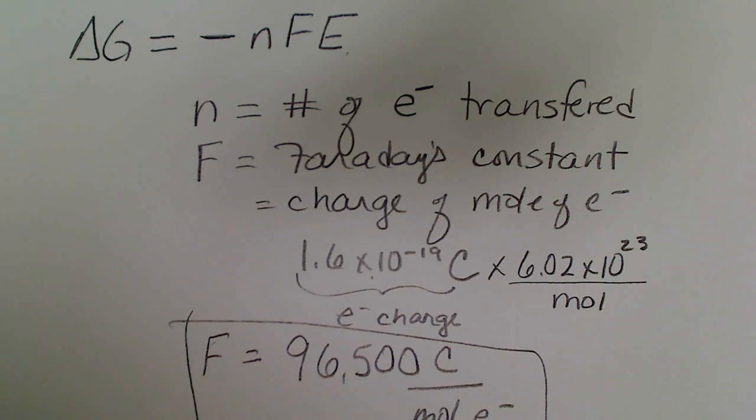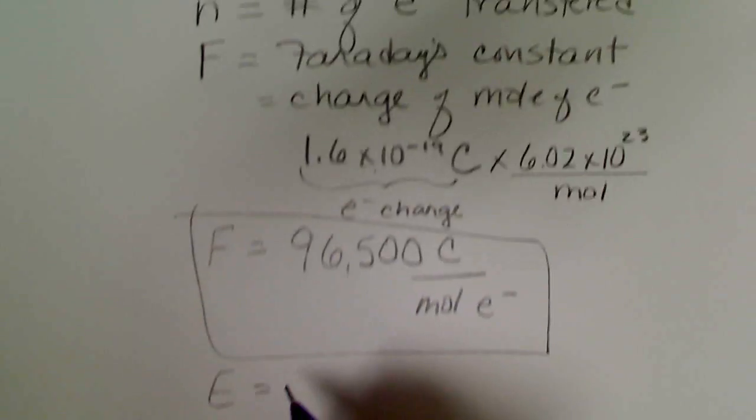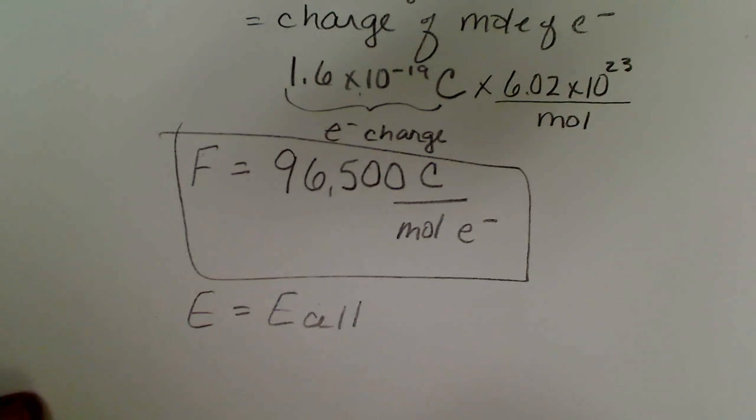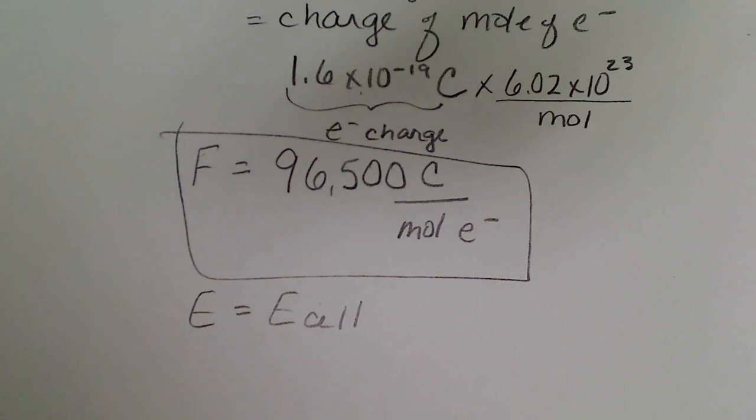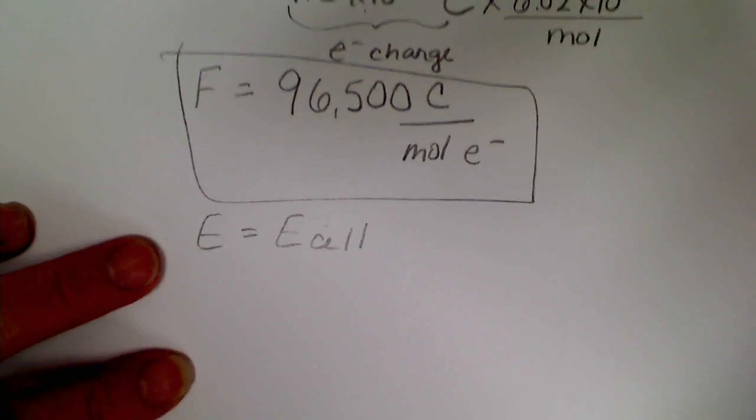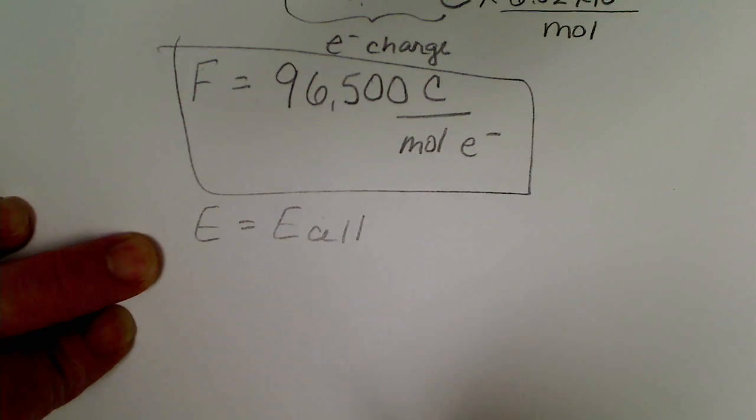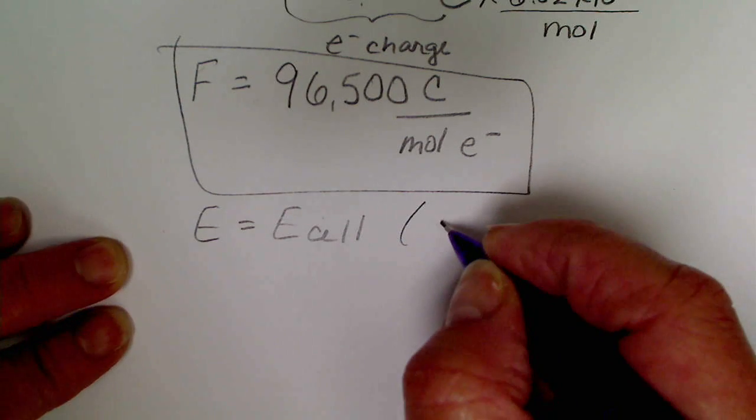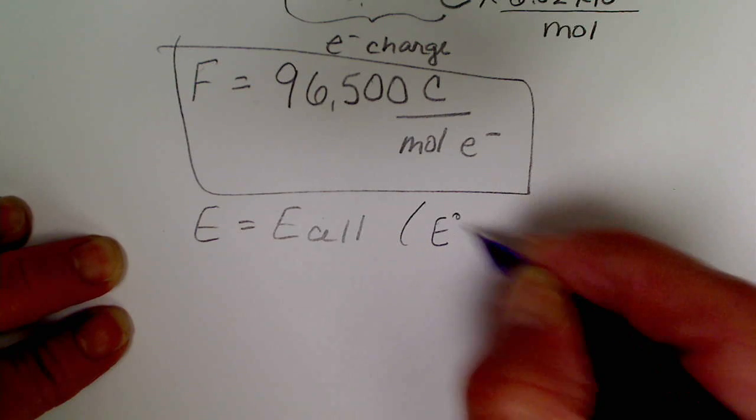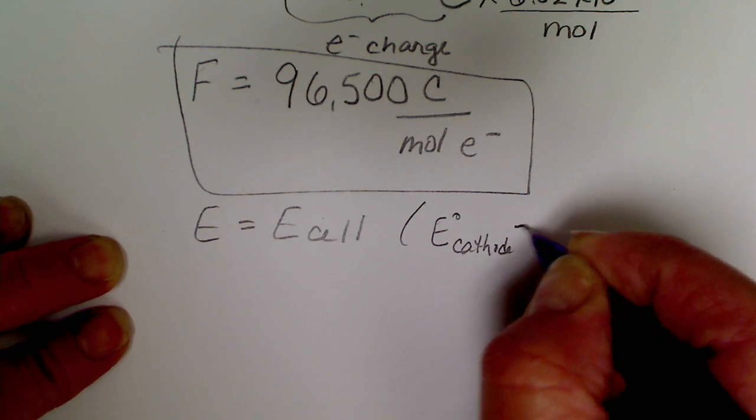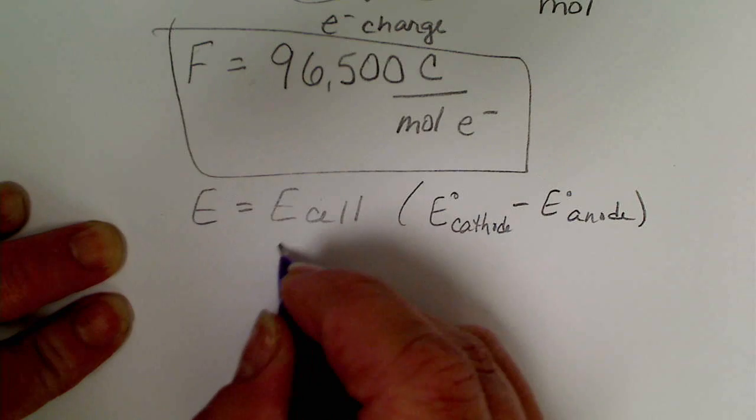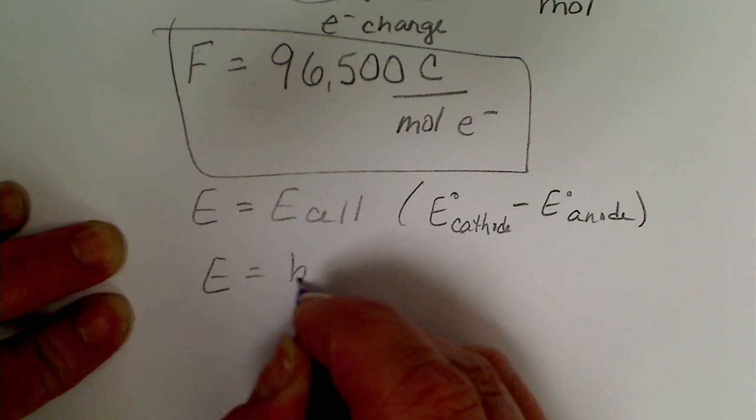The E that we see up here in this equation is just going to be the cell potential that we have been calculating using the table of standard reduction potentials. So E is the E cell, and remember this is the calculated value of the electrochemical cell.